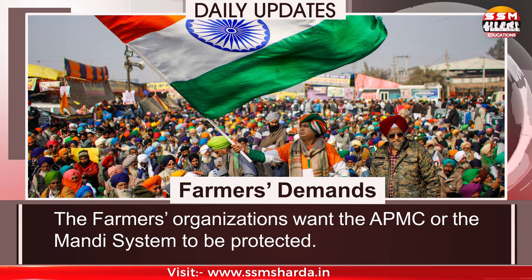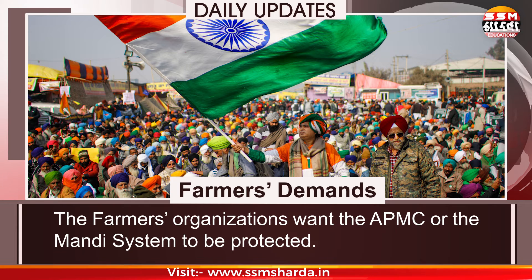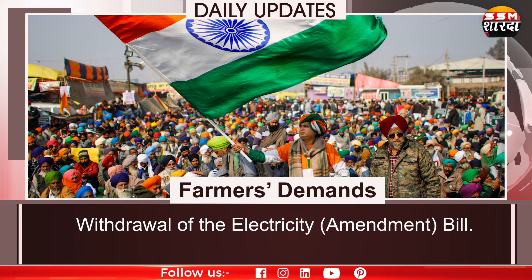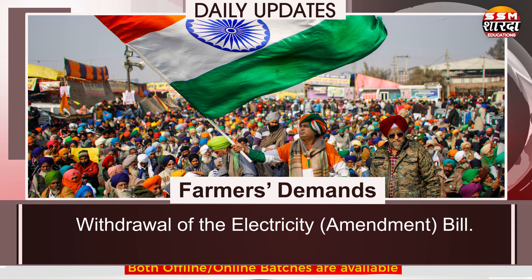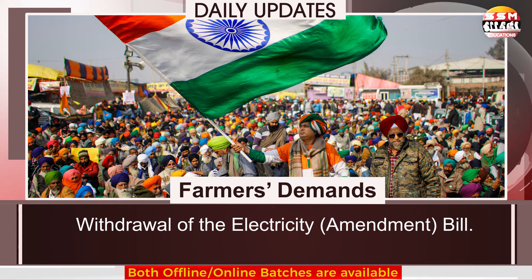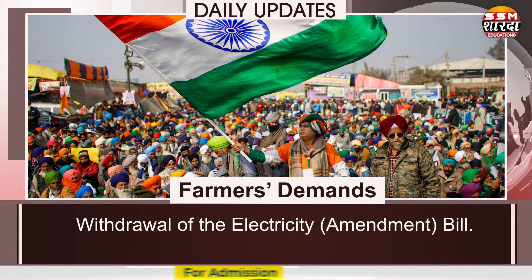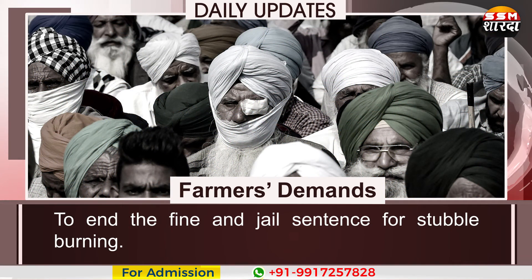The farmers' organizations want the APMC or the Mandi system to be protected. The third demand of farmers is the withdrawal of the electricity amendment bill, as they feel that they won't get free electricity due to this. The farmers' fourth demand is to end the fine and jail sentence for stubble burning.